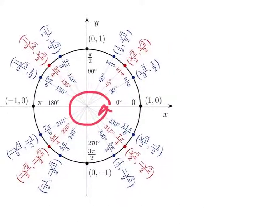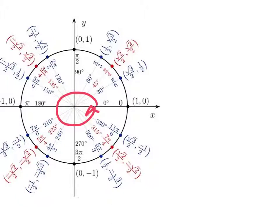But the SI units, or the standard units for theta, the angle, are called radians. And one complete rotation around the circle is 2 pi radians. So 2 pi radians is going to be the same thing as 360 degrees.